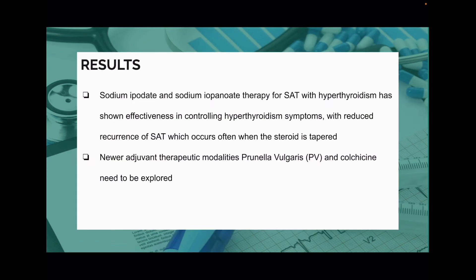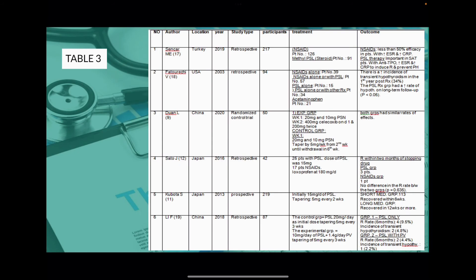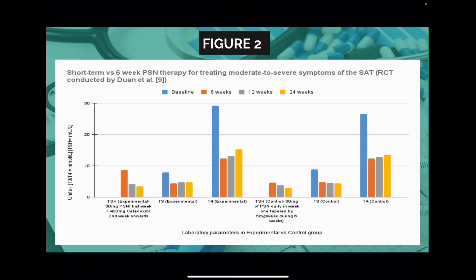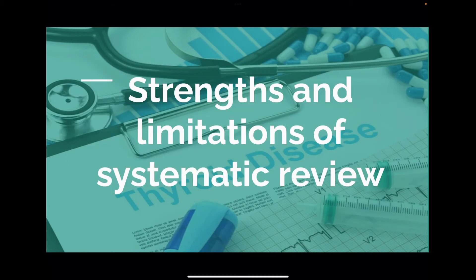Sodium epitase and sodium eopenoid therapy were other upcoming modalities. We also suggested exploring Prunella Vulgaris and colchicine therapy. Table 3 shows a list of the 15 articles included in our study, along with their study model and outcomes. Figure 2 shows short-term versus 6-week prednisone therapy for treating moderate to severe symptoms of SAT, as done in an RCT by Duan et al.